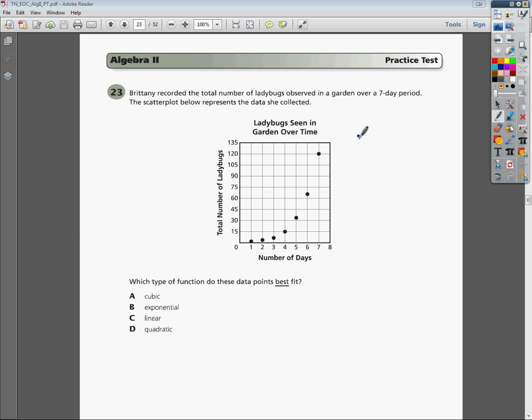Alright, this is the end of course Algebra 2 practice test, question number 23. The question says, Brittany recorded the total number of ladybugs observed in a garden over a 7 day period. Brittany is a very lonely girl. The scatter plot below represents the data that she collected. What type of function do these data points best fit?